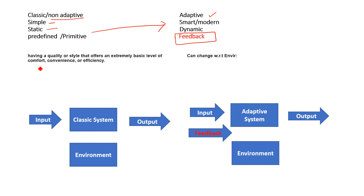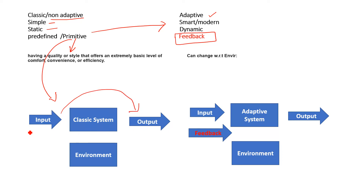Now how it works, I will explain. The simple definition of primitive is having a quality or style that offers an extremely basic level of comfort, convenience, or efficiency. You can take the primitive as an example — this is the classic machine. Whatever input we provide to our system, the same output we will receive. Whatever predefined input we insert, we get the output, and the output or action will not change according to the environment. That is why it is called a simple or static, classic system — it does not change with respect to environment.